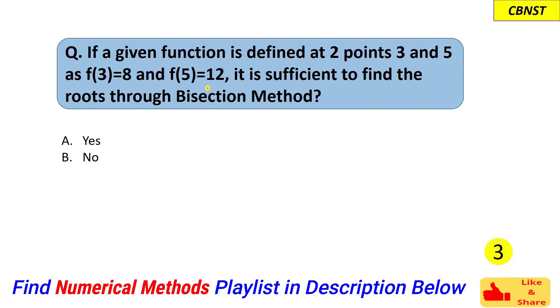Hello everyone. In this question we are asked: if we are given a function and it is defined at two points, 3 and 5, and the function value at these points is f(3)=8 and at point 5 it is f(5)=12.